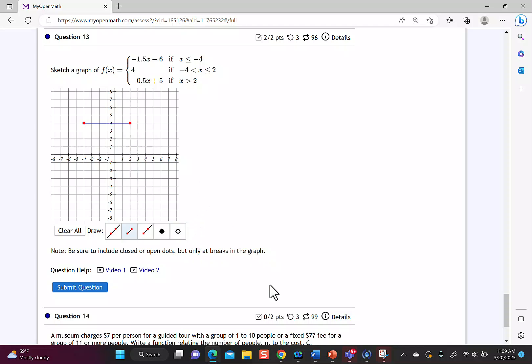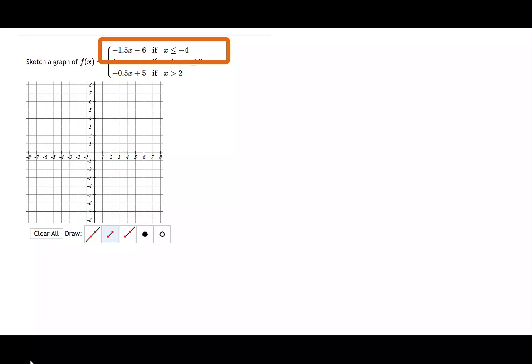All right, so let's go to the next piece, and we'll look at negative 1.5x minus 6 when x is less than or equal to negative 4. We'll start by just putting in the negative 4. So I have negative 1.5 of negative 4 minus 6. Negative 1.5 times negative 4 is a positive 6. Minus 6 gives me 0. So this says I have the point negative 4, 0.